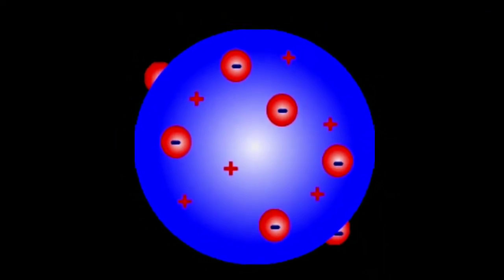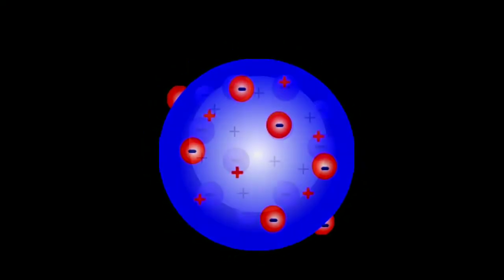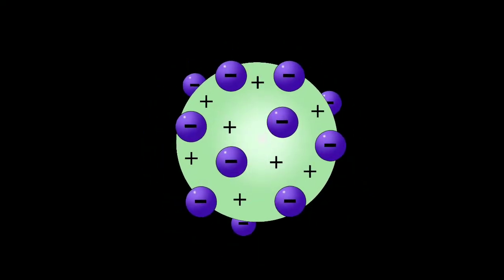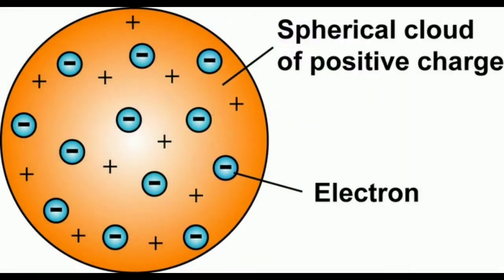In 1904, he put forward his model of the atom based on his findings, dubbed the plum pudding model. It envisaged the atom as a sphere of positive charge with electrons dotted throughout like plums in a pudding.